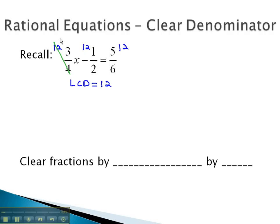We could then reduce the 12 over 4 to 3, the 12 over 2 to 6, and the 12 over 6 to 2, and multiply the remaining stuff together. 3 times 3x would be 9x, minus 6 times 1 is 6, equals 5 times 2 is 10, and we would end up with an equation we could solve.